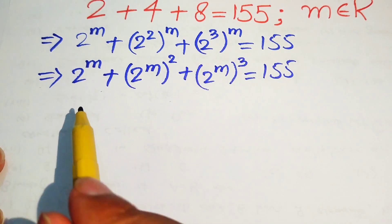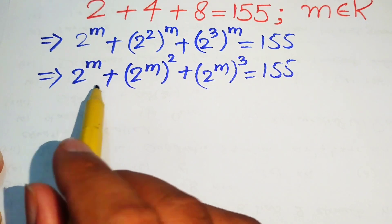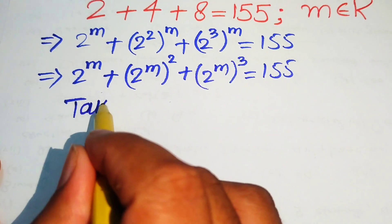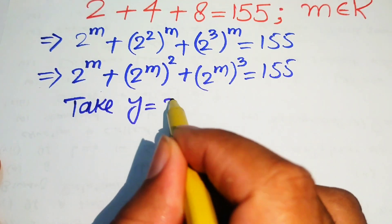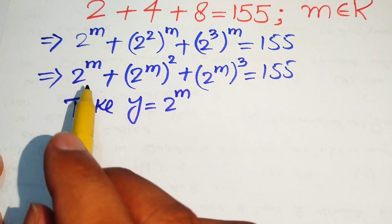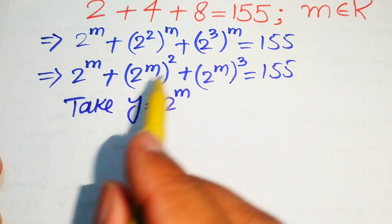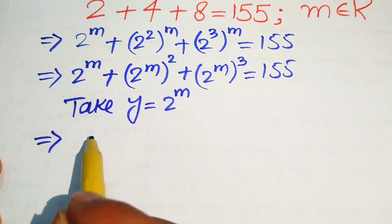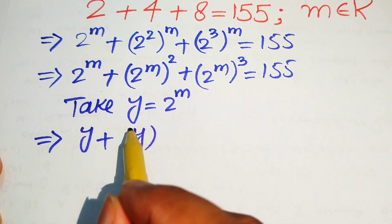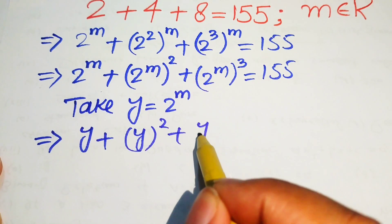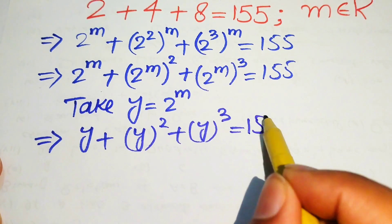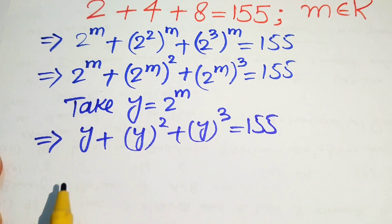You can see each term involves 2 to the power of m. So we let y equal 2 to the power of m. Substituting y into each term gives us y plus y squared plus y cubed equals 155.